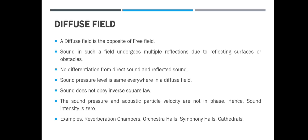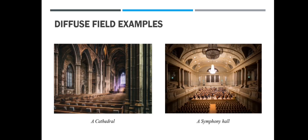Hence the sound intensity is also zero. Examples of a diffuse field are reverb chambers, orchestra halls, symphony halls, and cathedrals. The diffuse field can be used to your advantage — in orchestra halls and symphony halls, specific reverb times resonate with the performance to give the best live sound. On the left you have a cathedral, a perfect example of a diffuse field. On the right is a symphony hall whose curved ceiling bends and distributes sound to every region of the auditorium.